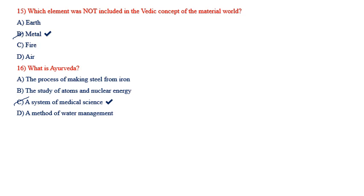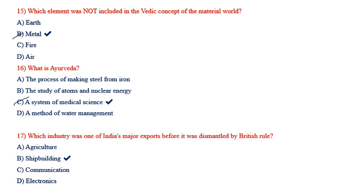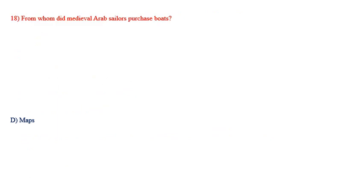Which industry was one of India's major exports before it was dismantled by British rule? Options: agriculture, shipbuilding, communication, electronics. The answer is shipbuilding.